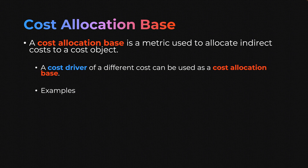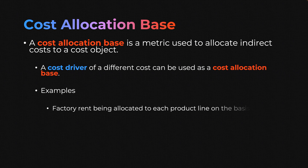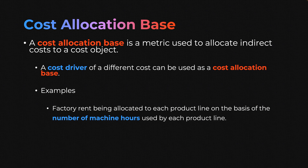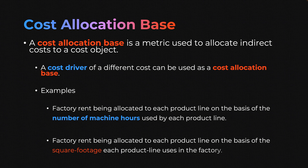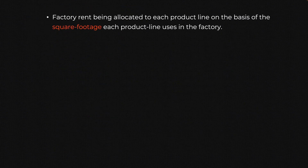Here are some examples. Factory rent being allocated to each product line on the basis of the number of machine hours used by each product line. The cost being allocated is factory rent and the cost allocation base is the number of machine hours. We know that machine hours can also be a cost driver of some other cost. Another example: factory rent allocated on the basis of the square footage each product line uses in the factory. We have actually used cost allocation base before in a prior lesson — we just didn't call it that.